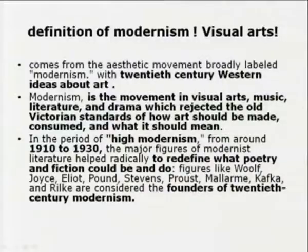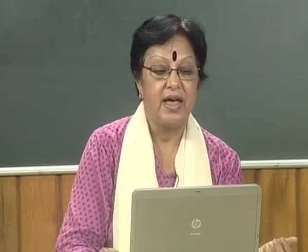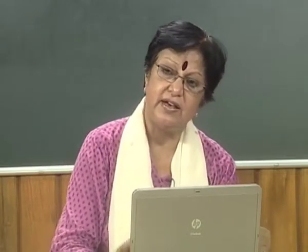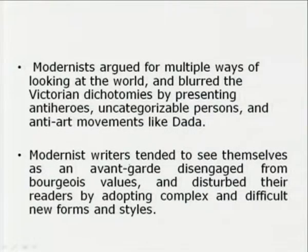Figures like Virginia Woolf, James Joyce, T.S. Eliot, Ezra Pound, Stevens, Proust, Mallarmé, Kafka, and Rilke are considered the founders of 20th-century modernism. Modernists argued for multiple ways of looking at the world — not just one subjective viewpoint — and blurred Victorian dichotomies by presenting antiheroes, uncategorizable persons, and anti-art movements like Dada. It was a huge panorama of multiple perspectives, not connected to a preconceived notion of what a novel or character should be.